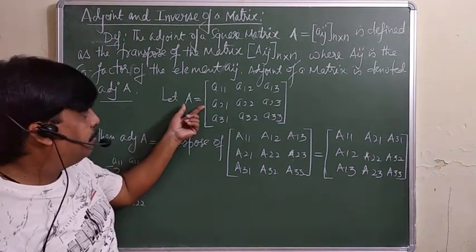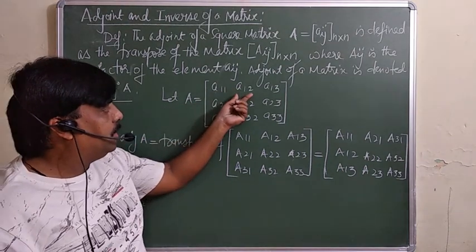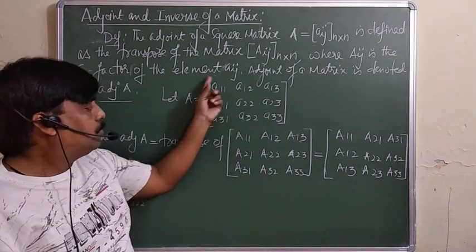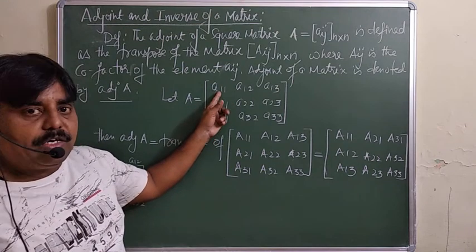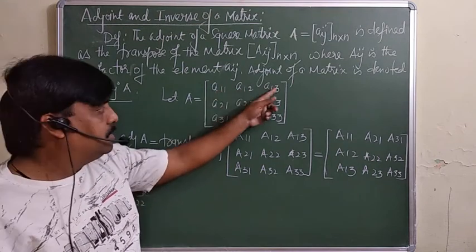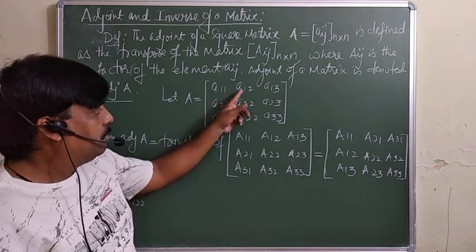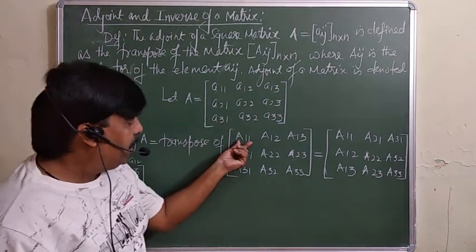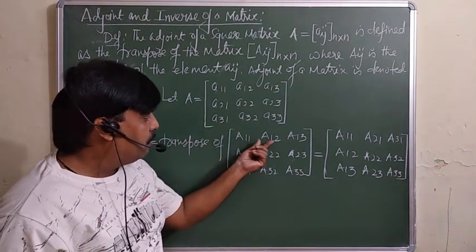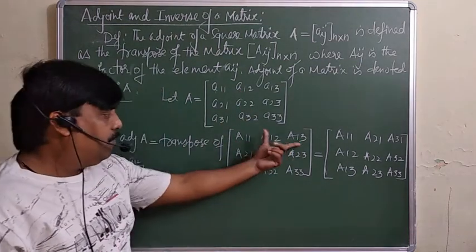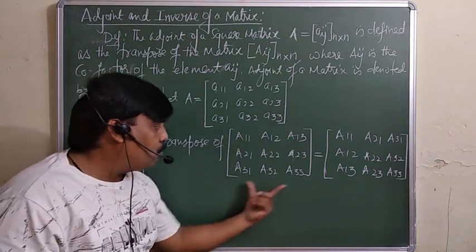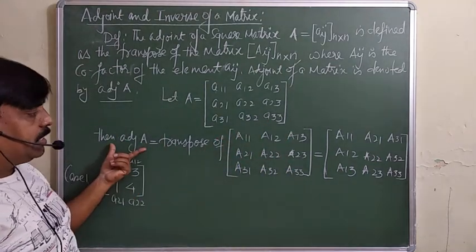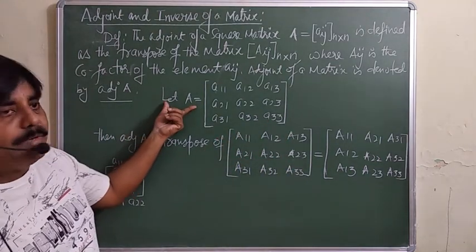Suppose matrix A has elements A_11, A_12, A_13, and so on. You are first supposed to write down the cofactors of these elements — cofactor of A_11, cofactor of A_12 — giving capital cofactors A_11, A_12, and so on. If we take the transpose of this cofactor matrix, then you will get the adjoint of matrix A.